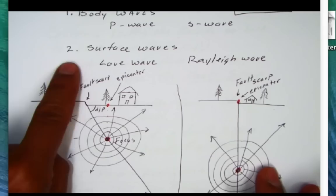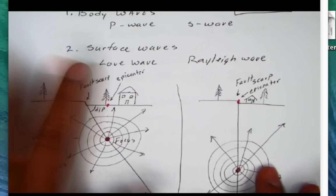The other group of waves are called surface waves. Those two, one is called the Love wave, the other one's the Rayleigh wave. I'll show you how those move in a moment.